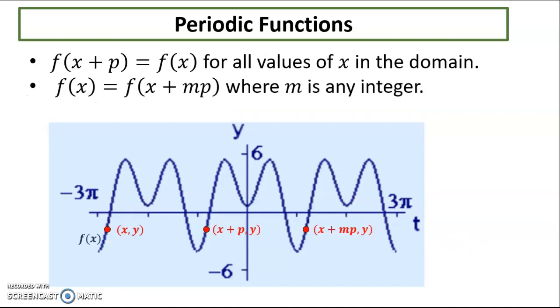If the graph repeats, then the Y values have to repeat, right? So if I'm at this point on the graph, every single time I have that valley that's above the x-axis, my Y value's got to be the exact same. Because if the functions are repeating, then my Y value has to be repeating.